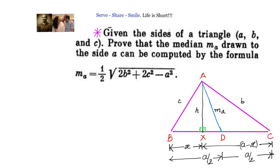We have drawn AD, where D divides BC into two equal parts, so AD is the median. We want to use the Pythagoras theorem to solve this problem, so we have dropped a perpendicular — an altitude — from A onto BC. The approach is to identify right triangles, apply Pythagoras theorem, and manipulate the equations to find MA.